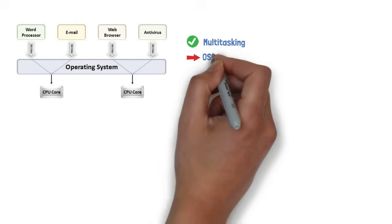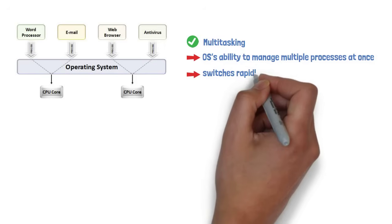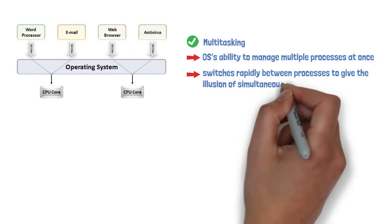Multitasking is the OS's ability to manage multiple processes at once. It switches rapidly between processes to give the illusion of simultaneous execution.